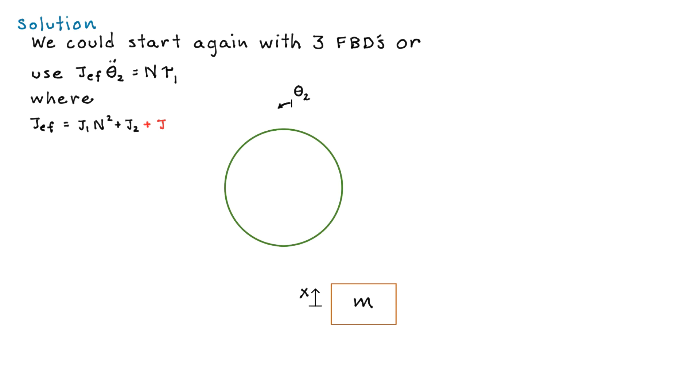And so now our free body diagrams look like this. We have theta 2 in the direction shown, so counterclockwise, and x is positive up. And we can work out some kinematics between theta 2 and x, similar to how we did for the two gears, r theta 2 is equal to x. And you can flip that around. And you can differentiate that as many times as you'd like.